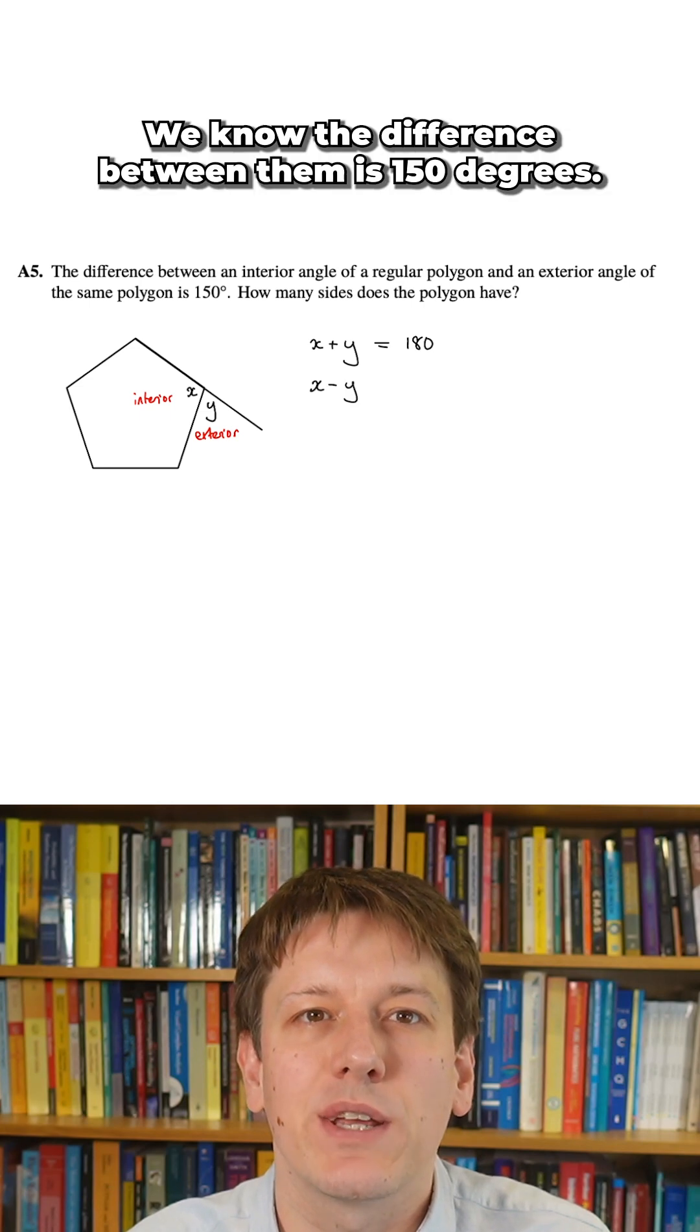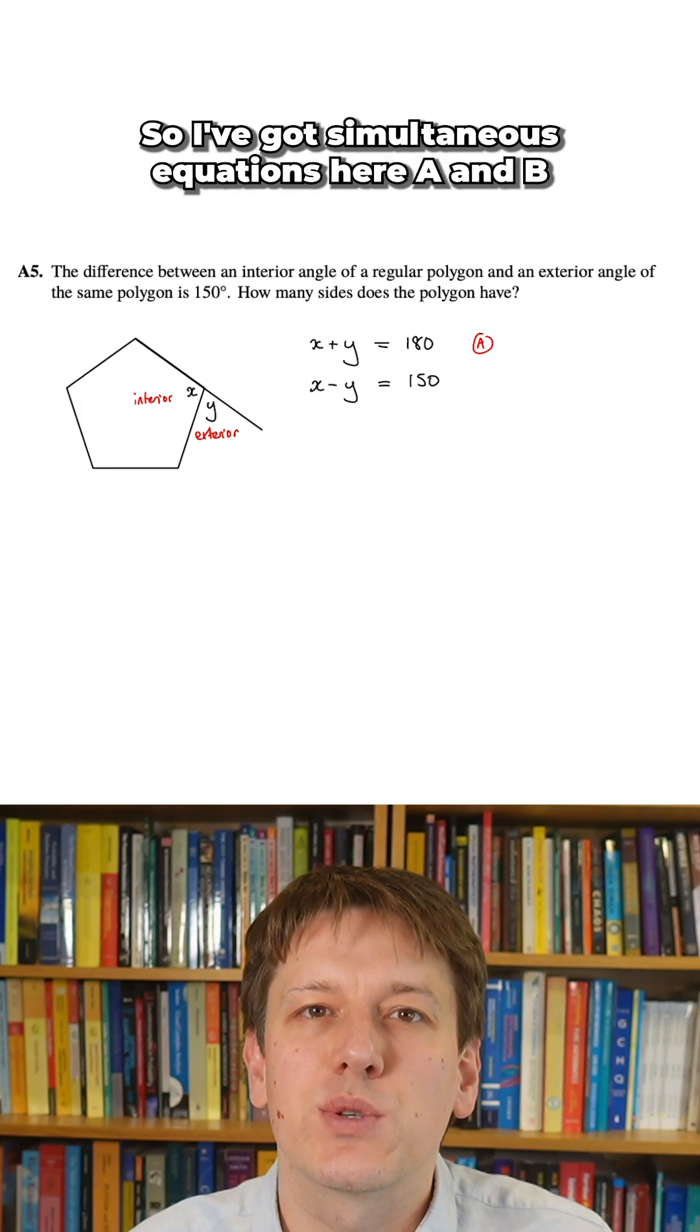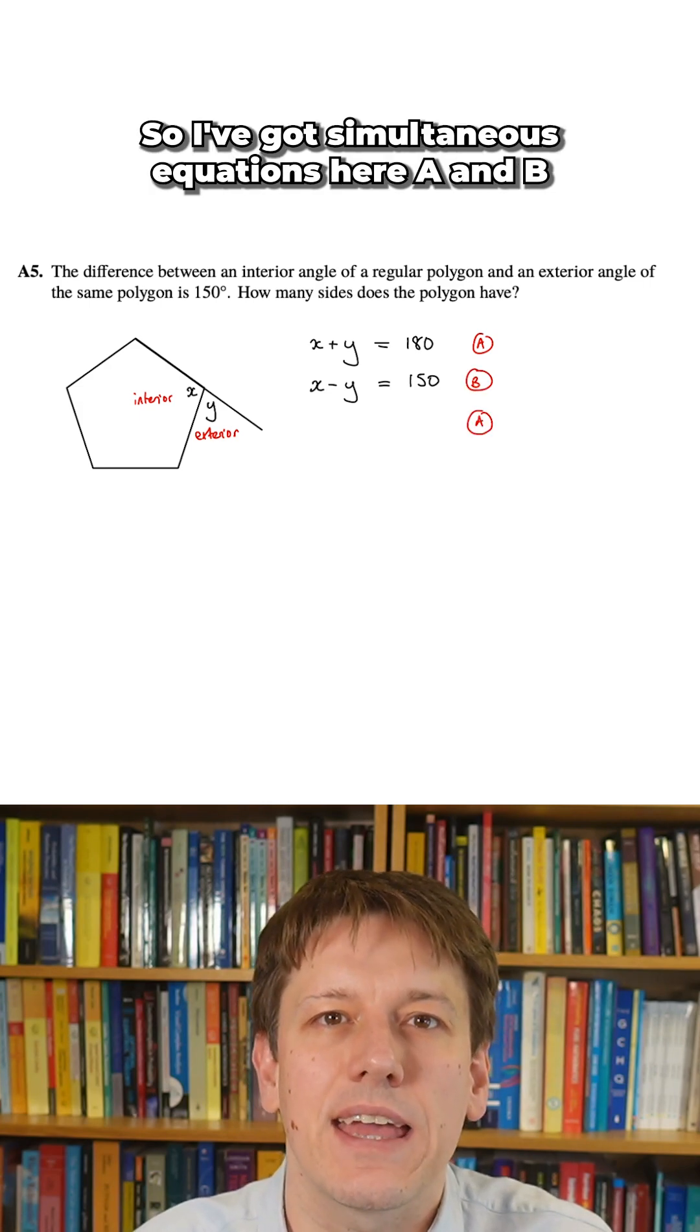So what else do we know here? We know the difference between them is 150 degrees, so x minus y is equal to 150 degrees. So I've got simultaneous equations here, A and B,